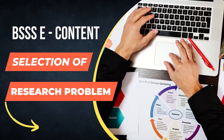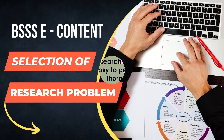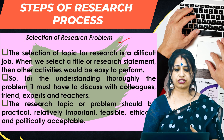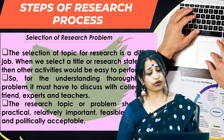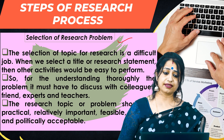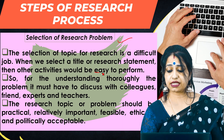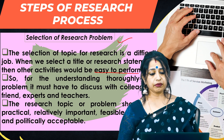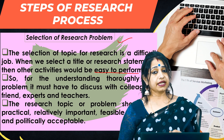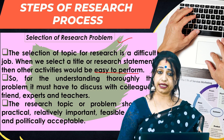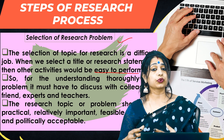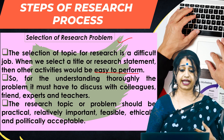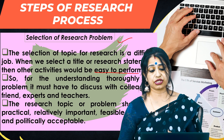The first step in detail is the selection of a research problem or topic. Selecting a topic for research is a difficult job. When we select a title or research statement, other activities become easier to perform. To understand the problem thoroughly, it must be discussed with colleagues or persons well skilled in the research field — friends, experts, teachers, or academicians.